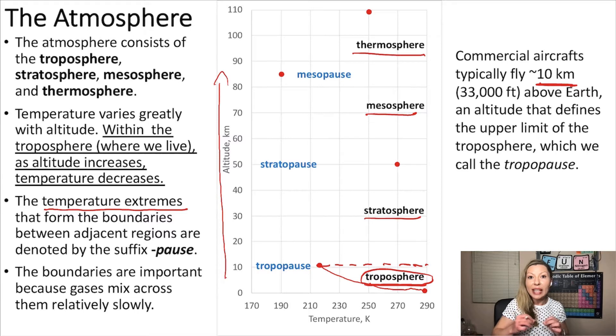After that, as we go from the tropopause into the stratosphere, the temperature starts increasing again, back up to the stratopause, which divides the stratosphere from the mesosphere. In the mesosphere, the temperature starts decreasing again.